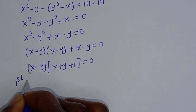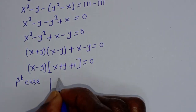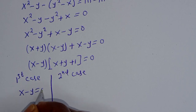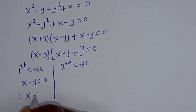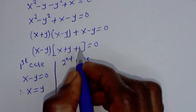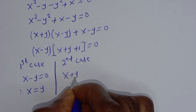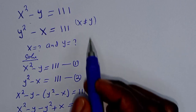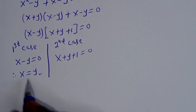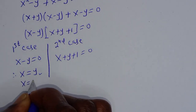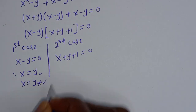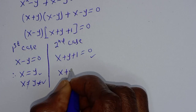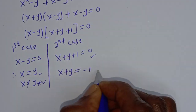The first case is x minus y equals 0, therefore x equals y. The second case is x plus y plus 1 equals 0. But the question states x is not equal to y, therefore x equals y is undefined. Since x is not equal to y, we consider the second case: x plus y equals negative 1. Let's call this equation 3.